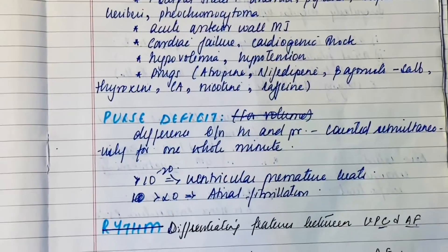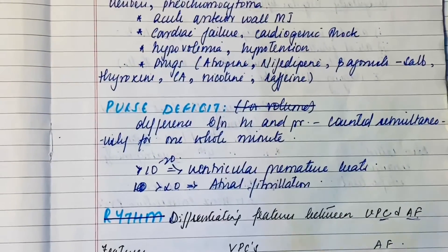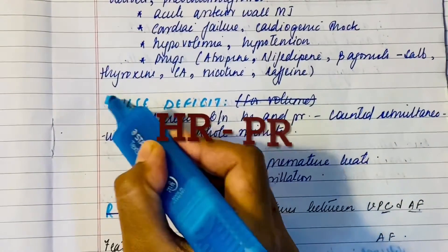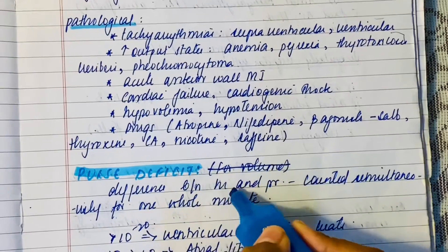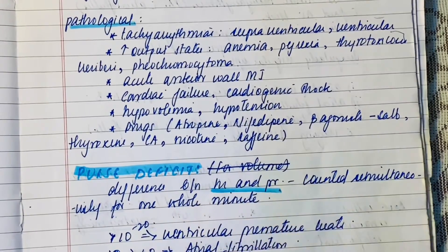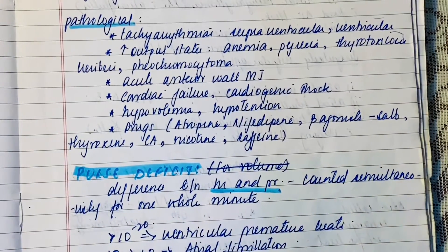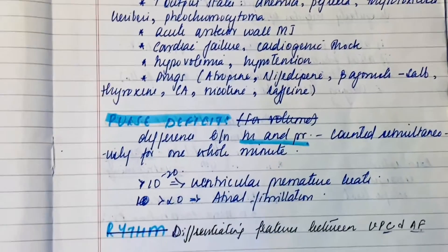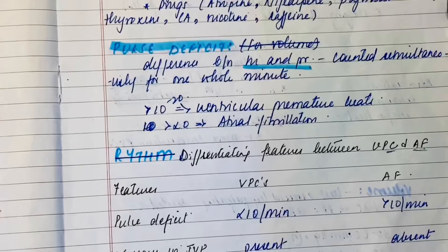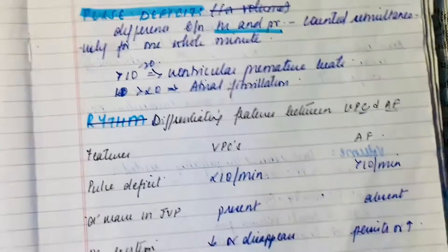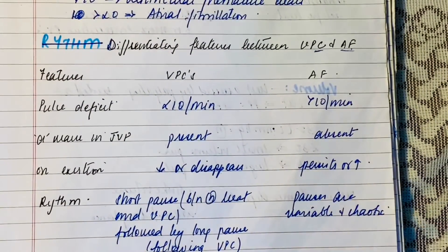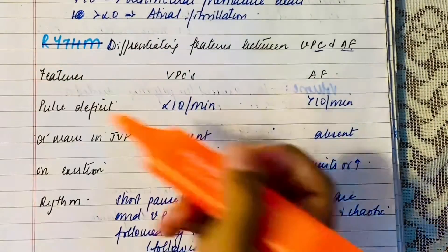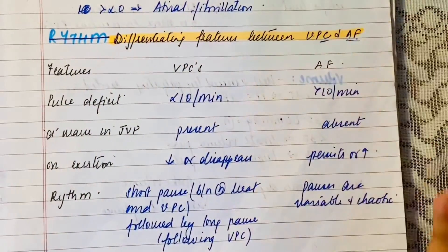Pulse deficit is the difference between the heart rate and the pulse rate, and it should be counted simultaneously for one entire minute. It is useful because it can help us differentiate between ventricular premature contractions and atrial fibrillation.